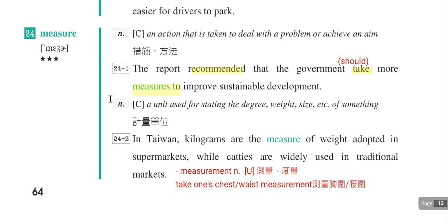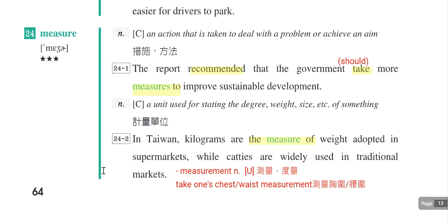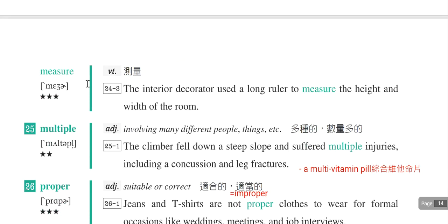Measure还可以当计量单位使用，动词measure表示测量。例如take one's chest or waist measurement，测量胸围或腰围。例句：The interior decorator used a long ruler to measure the height and width of the room。